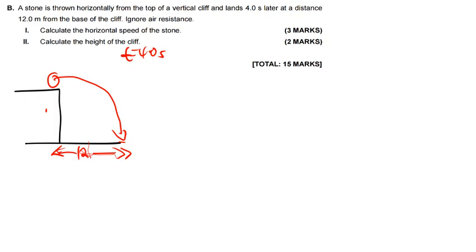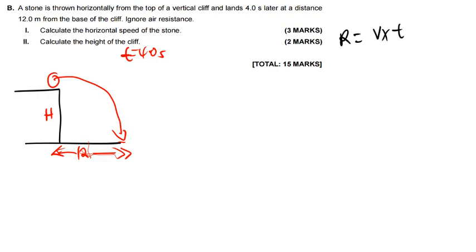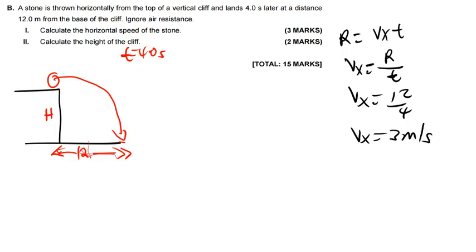We are trying to find the horizontal speed. The formula for range is VX times T. I have T and the range. Range is 12, so making VX the subject: VX equals R divided by T, which is 12 divided by 4. My VX equals 3 meters per second. Remember: the velocity in the x-direction doesn't change — it remains the same throughout.